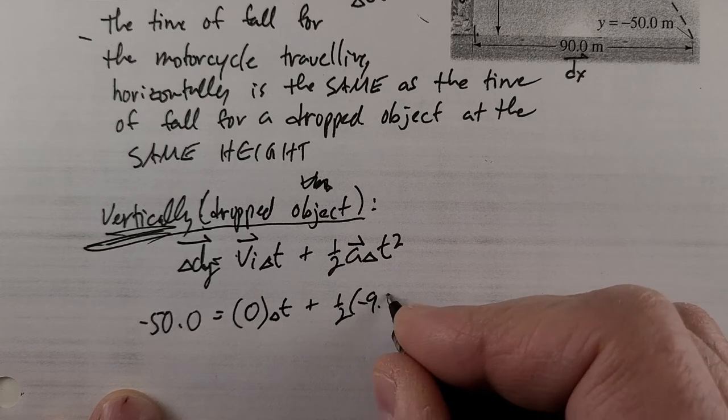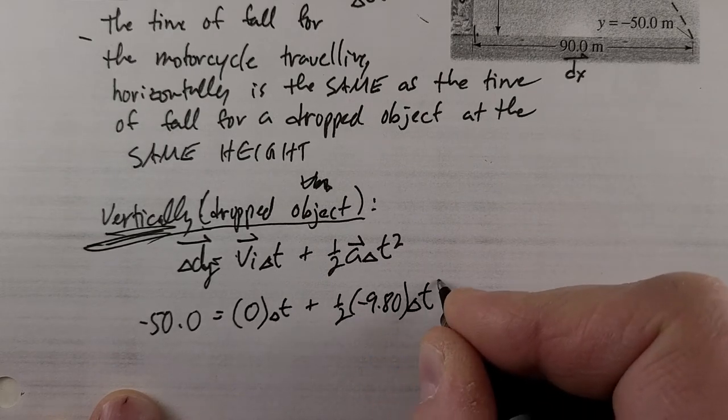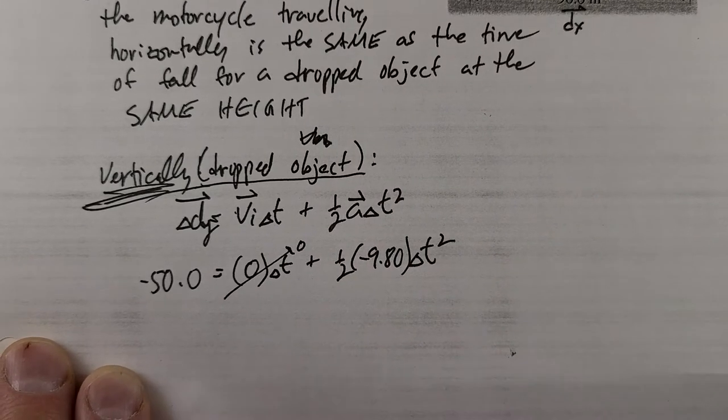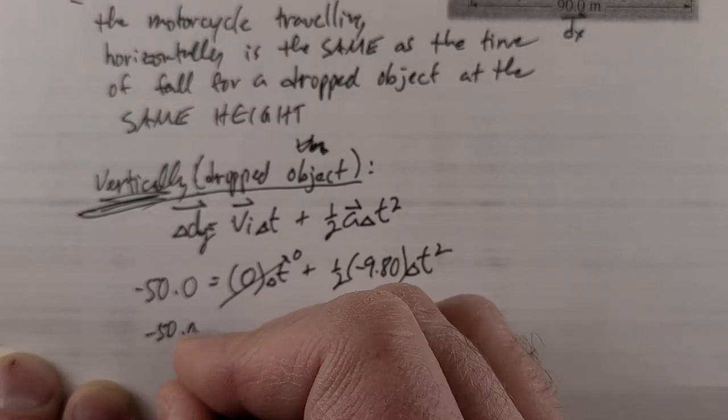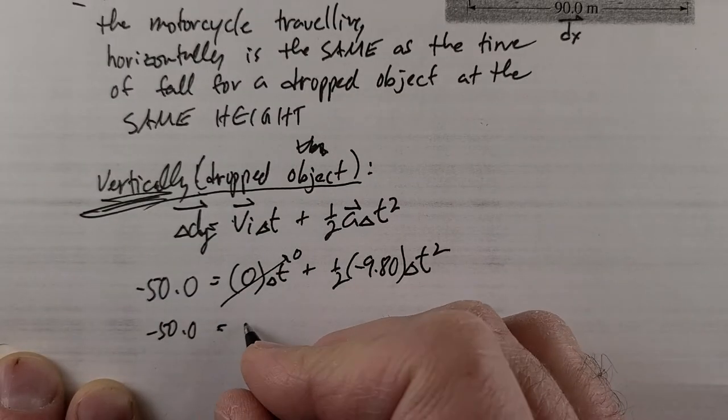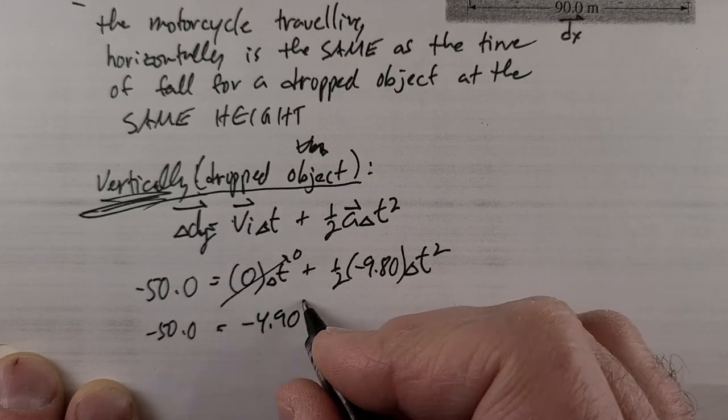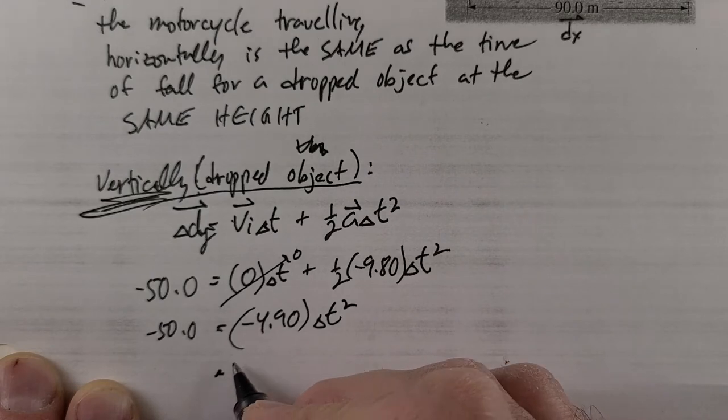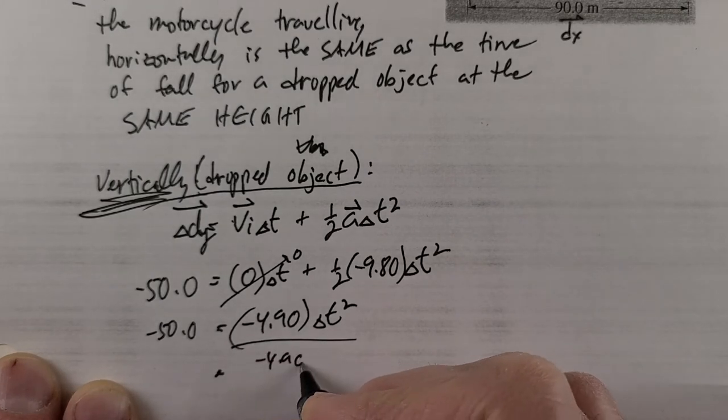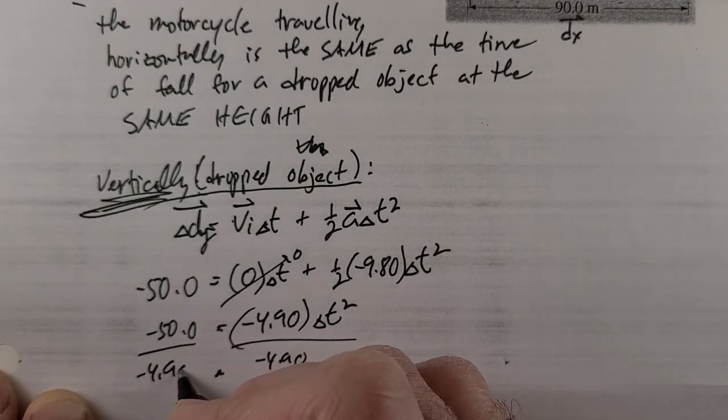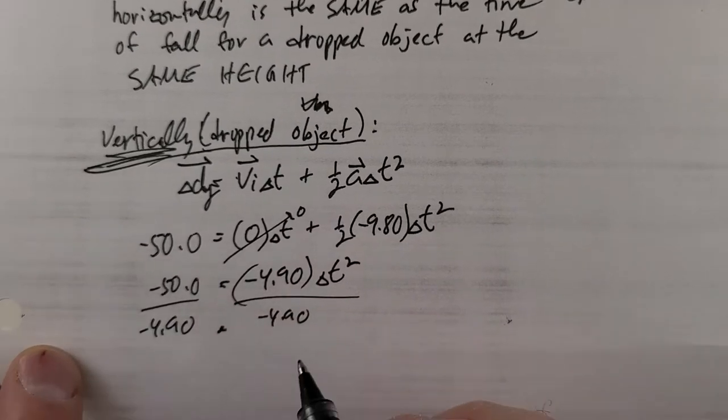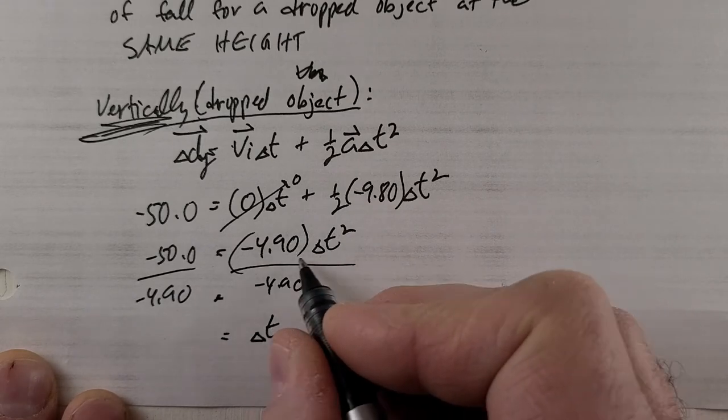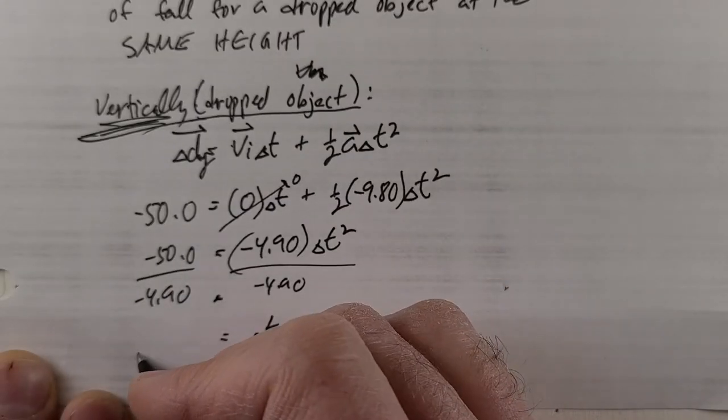So negative 50 equals one half of negative 9.8 times Δt². That's going to be all zero over there. So negative 50, then one half of negative 9.8 is negative 4.9. Divided by negative 4.9, and negative divided by negative gives me a positive, which is good because my t has to be positive.